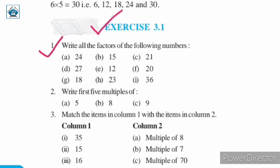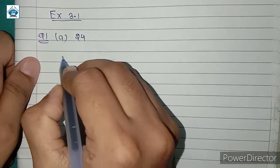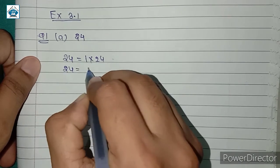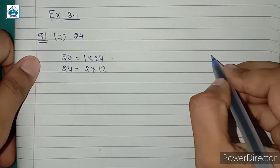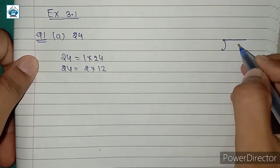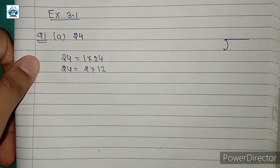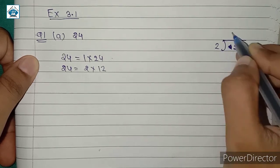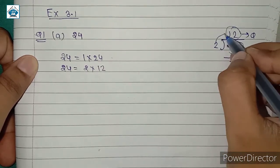Now let us begin Exercise 3.1. Question 1: Write all the factors of the following numbers. First, 24. To find all the factors of 24, we look for numbers by which 24 can be exactly divided. We can write 24 = 1 × 24 and 24 = 2 × 12. When we divide 24 by 2, the quotient is 12 and the remainder is 0.